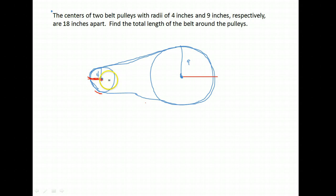So we're going to have to find this length on the belt on that circle, the length on this circle, and then the distance between the top of this circle and the top of this circle.